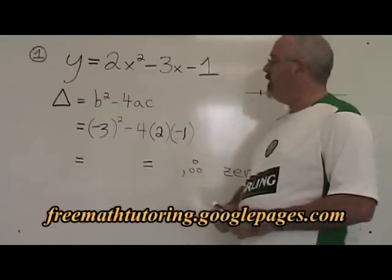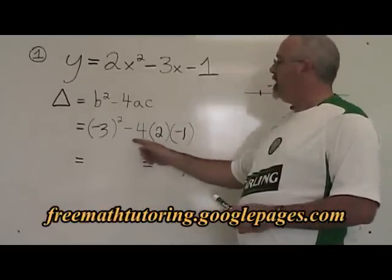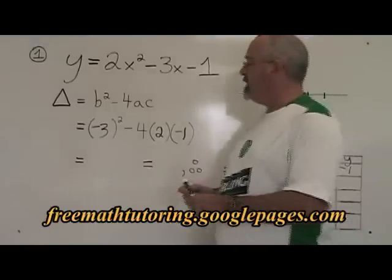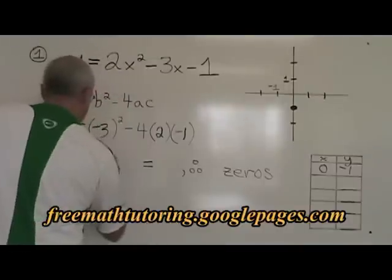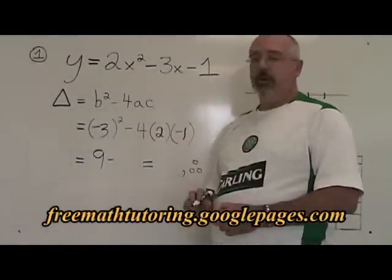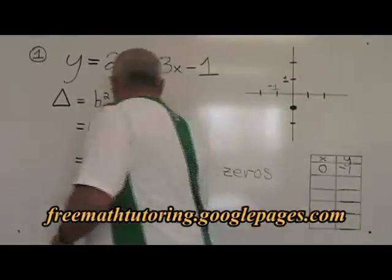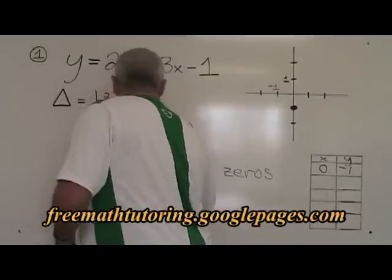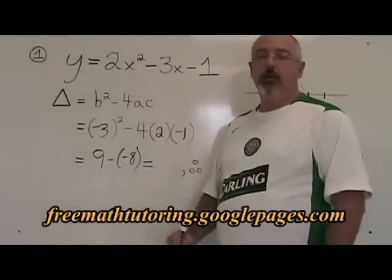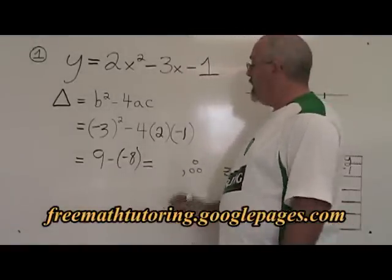So we end up with negative 3 squared minus 4 times 2 times negative 1. Negative 3 squared is positive 9. 4 times 2 times negative 1 is negative 8. So our formula gives us 9 minus negative 8, which is the same as 9 plus 8. It's 17.